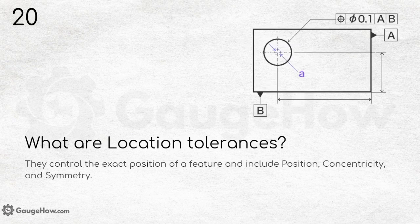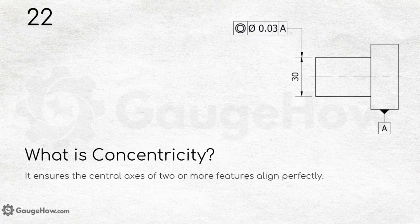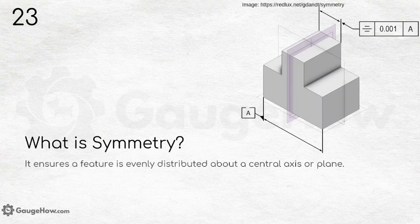What are location tolerances? They control the exact position of a feature and include position, concentricity, and symmetry. What is true position? It ensures a hole or feature is within a defined tolerance zone relative to the datums. What is concentricity? It ensures the central axis of two or more features align perfectly. Concentricity is one of the most widely used GD&T symbols.